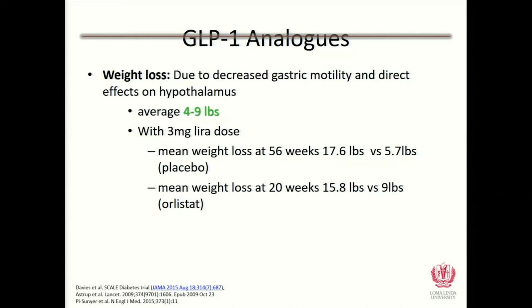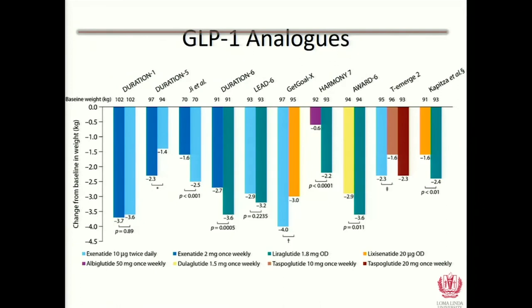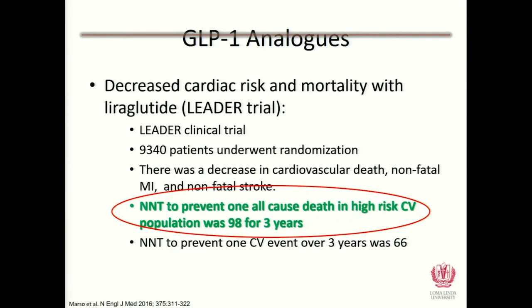Weight loss with GLP-1s averages 4 to 9 pounds. At the 3 mg dose of liraglutide (Saxenda), a 56-week study showed mean weight loss of 18 pounds versus 5 pounds with placebo, and 15.8 pounds versus 9 pounds when tested against orlistat — very significant weight loss. Importantly, all GLP-1s on the market have meaningful weight loss associated with them, so if insurance doesn't cover one brand, you can confidently use another knowing there will be weight loss benefit.